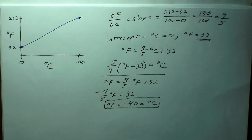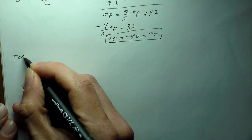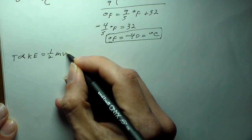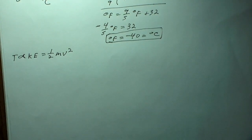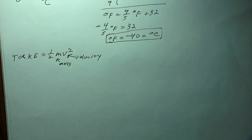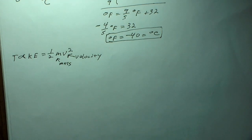What is temperature? Temperature is proportional to the kinetic energy of the particles, and kinetic energy is 1/2 times the mass of the particles times the velocity of the particles squared. So if you have something that's very cold, the particles are not moving as fast; if something is very hot, the particles are moving with a very high velocity.